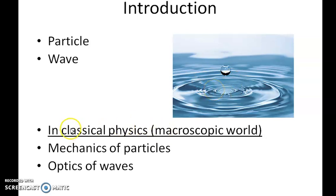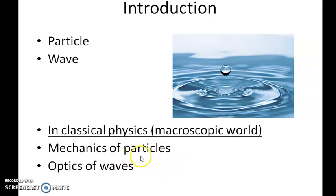In classical physics — the physics of the macroscopic world — mechanics of particles and optics of waves are completely different disciplines. The branch of physics dealing with the movement of particles is mechanics, and the branch dealing with the behavior of waves is optics. They are entirely different in classical physics, in the macroscopic world.